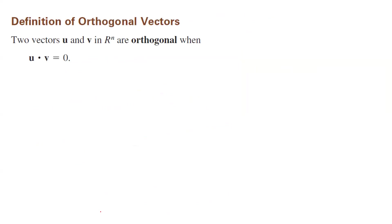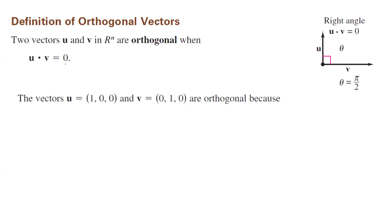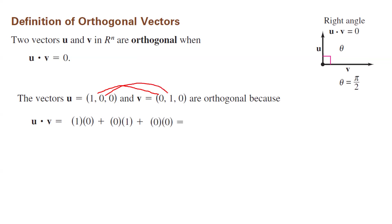Now, the definition of orthogonal vectors: two vectors in n-space are called orthogonal if their dot product is equal to 0. You can visualize it this way — the angle between them is pi over 2, or 90 degrees. Consider the standard vectors representing the x-axis and y-axis. Their dot product is 1 times 0 plus 0 times 1 plus 0 times 0, which equals 0. So by definition, these two vectors are orthogonal.